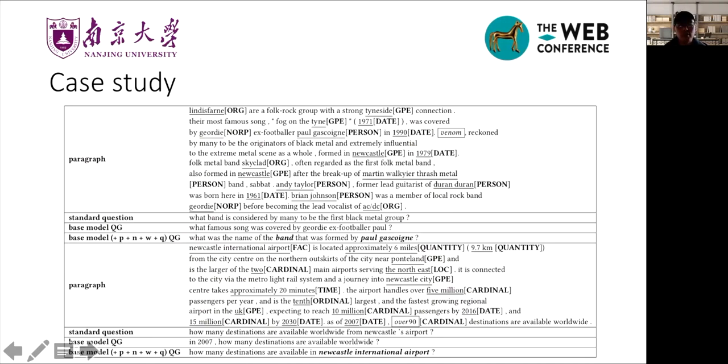Also, we do case studies on two samples. For the first example, the standard question is asked about band. Without linguistic features, the base model generates question about 'some', which is obviously improper. Meanwhile, from the content of the base model's question, we can see the model doesn't know Paul Gascoigne is a whole entity. After incorporating our linguistic features, the model generates the question correctly both in the syntax and semantic meaning.